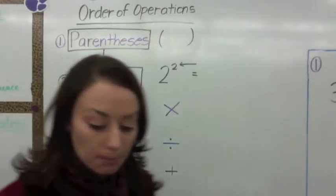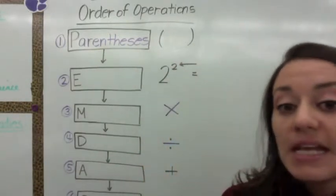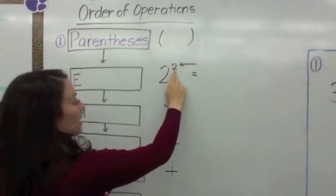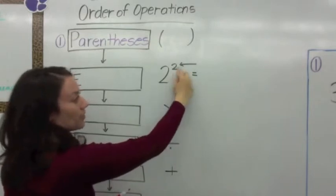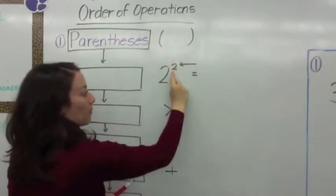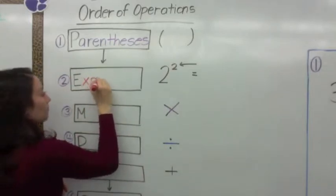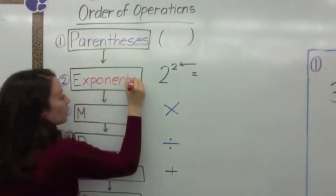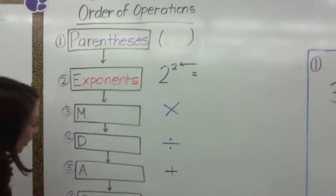The second step we aren't going to be doing until Monday, but it would be if you see exponents. An exponent is the little number on top — they call it a superscript because it's up high. This is called an exponent. So next you would work with exponents, which we will see on Monday. But for today we're going to focus on parentheses and the operations you're familiar with.